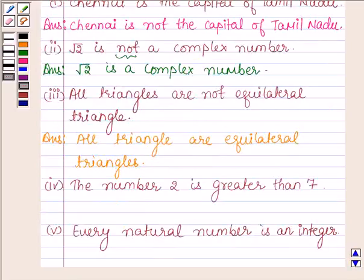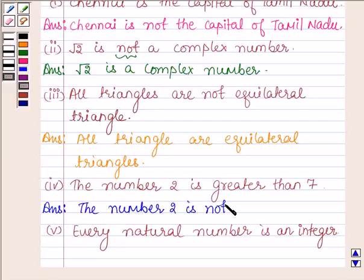And now, proceeding on to the fourth part, which says, the number 2 is greater than 7. The negation of this statement is, the number 2 is not greater than 7.